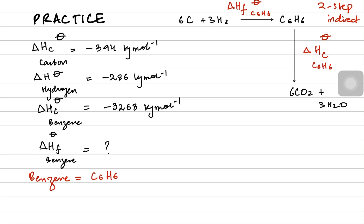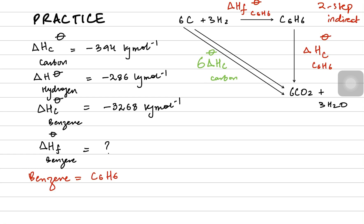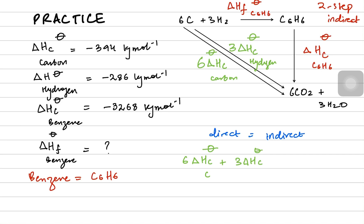The direct method would be to combust the carbon and hydrogen directly without making benzene at all. In the direct method you combust pure carbon — the standard enthalpy of combustion for carbon — six times, because you use six moles of carbon, and you combust pure hydrogen — the standard enthalpy of combustion for hydrogen — three times, because you use three moles. So: direct method = six × ΔHc°(C) + three × ΔHc°(H₂) = ΔHf°(benzene) + ΔHc°(benzene).